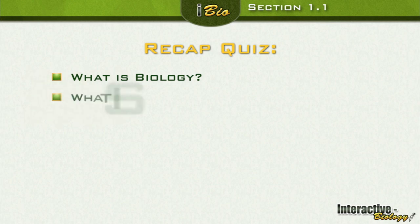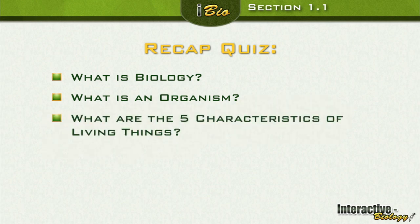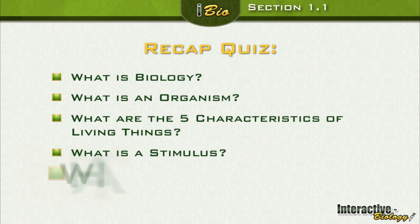Let's have a little recap quiz. Question one: what is biology? The study of life. Question two: what is an organism? A living thing. What are the five characteristics? One through five. What is a stimulus? Anything that causes a response. And what is homeostasis? An easy way to remember: maintaining a balance.